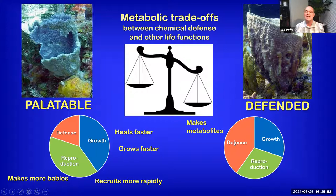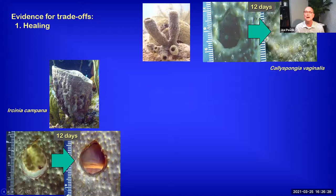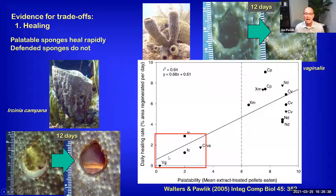This is a really interesting question to use sponges for because we have all these morphologically different sponges we can manipulate in different ways. To test differences in healing, we looked at tube and vase-shaped sponges and simply punched holes in them and observed their healing capacity. Over 12 days, Ircinia campana, a chemically defended species, showed virtually no healing. But when we did the same thing to the gray tube sponge, the hole healed over in about 12 days. There was a clear difference: the chemically defended species had extremely slow healing rates, whereas all the palatable species healed very rapidly.